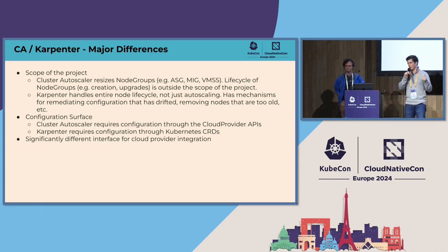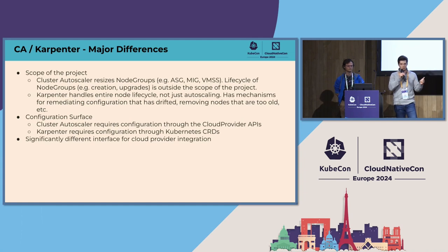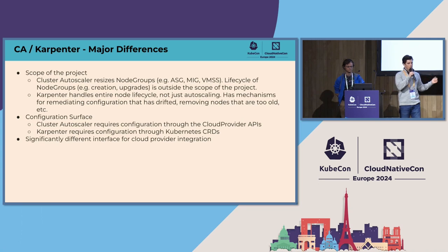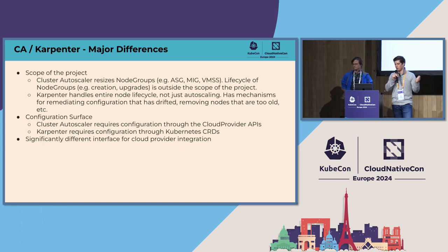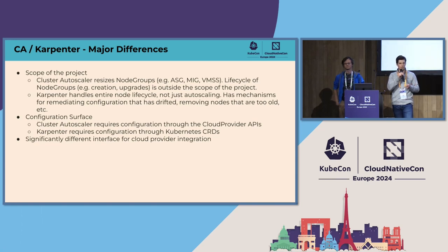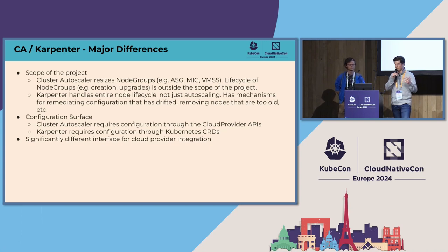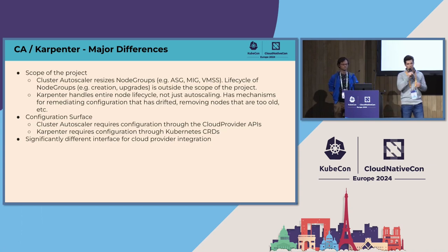Karpenter takes a slightly different approach — it handles the entire node lifecycle. We handle node upgrades effectively: if you have a new image or new worker AMI to roll out, the node will roll out through a feature we call Drift. All configuration for Karpenter sits inside the Kubernetes cluster through custom resources based on CRDs that Karpenter provides.